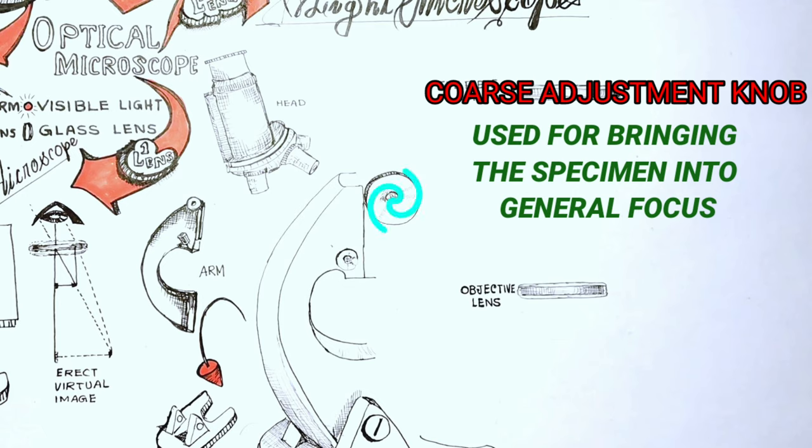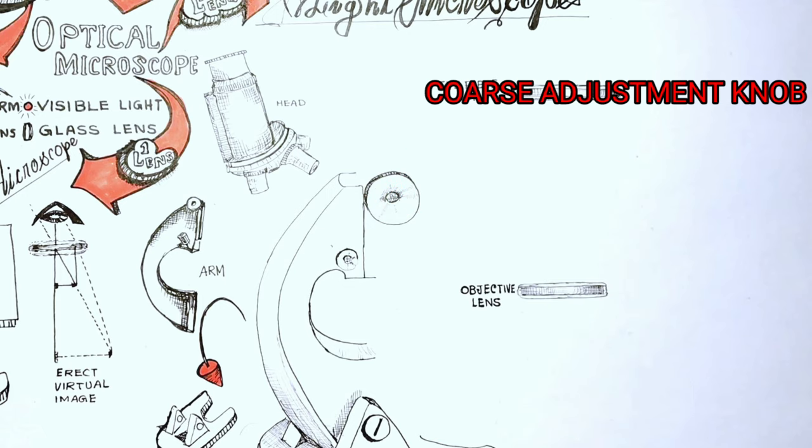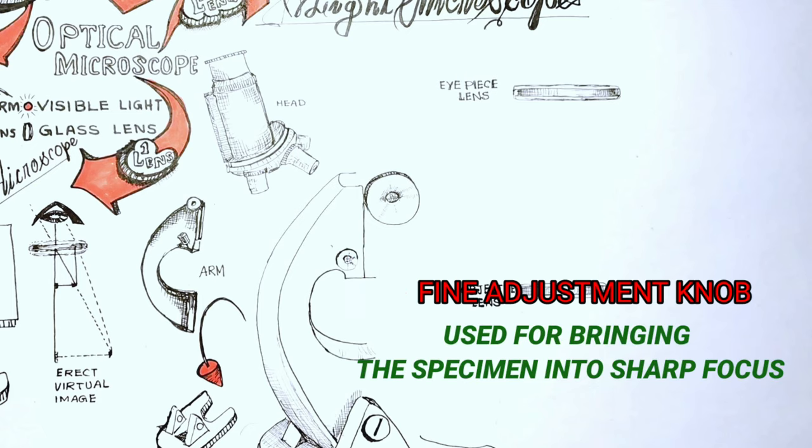But uncontrolled rotation of the coarse adjustment screw may lead the objective lens onto the slide which can result into the destruction of the specimen. So coarse adjustment knob should only be used with low power objective lenses like 4x, 10x and never with high power lenses that is 40x, 100x. The smaller knob located below the coarse adjustment knob is known as the fine adjustment knob and is used to bring the specimen into sharp focus.